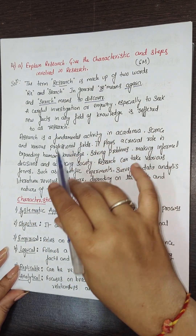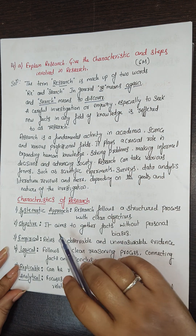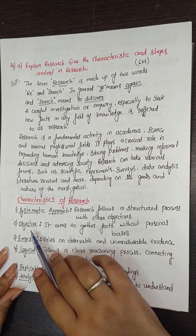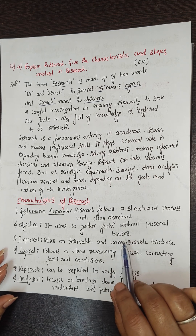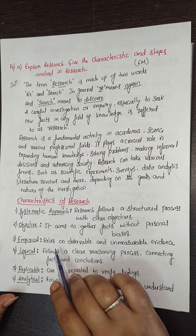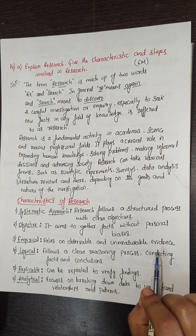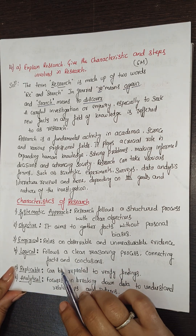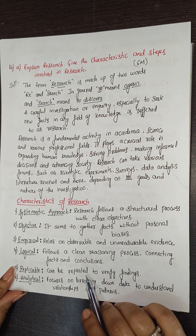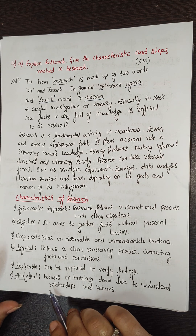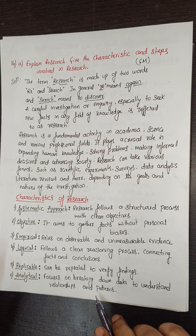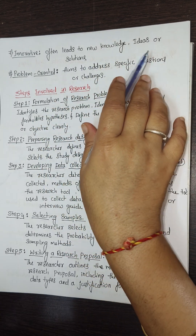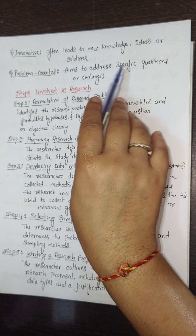The characteristics involved in research: Research follows a structured process with clear objectives — it aims to gather facts without personal biases. Empirical: relies on observable and measurable evidence. Logical: follows a clear reasoning process connecting facts and conclusions. Replicable: can be repeated to verify findings. Analytical: focuses on breaking down data to understand relationships and patterns. Innovative: often leads to new knowledge, ideas, or solutions. Problem-oriented: aims to address specific questions or challenges.